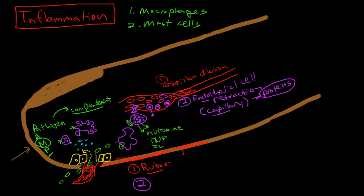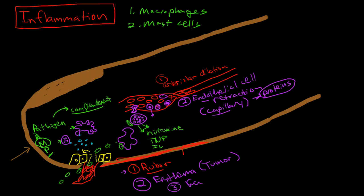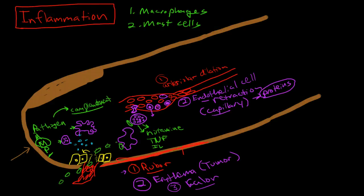Because the proteins are leaking into the tissues, more liquid than usual will follow, and so that is going to cause erythema or swelling of that area. This gives us rubor, tumor, and calor - the calor is also related to the increased blood flow to the area as well. The next step in the process is activation of the complement through cytokines secreted by mast cells and macrophages.